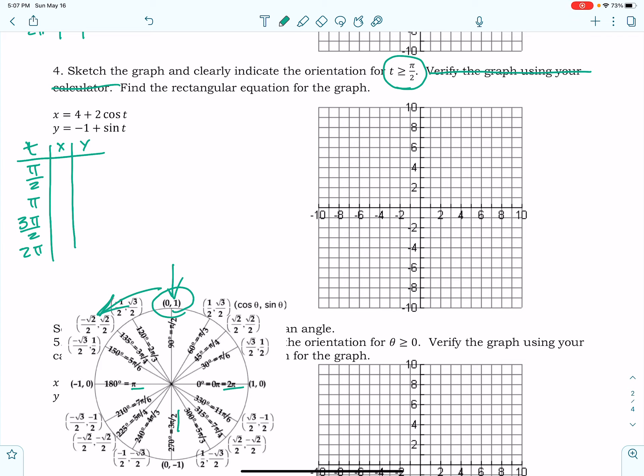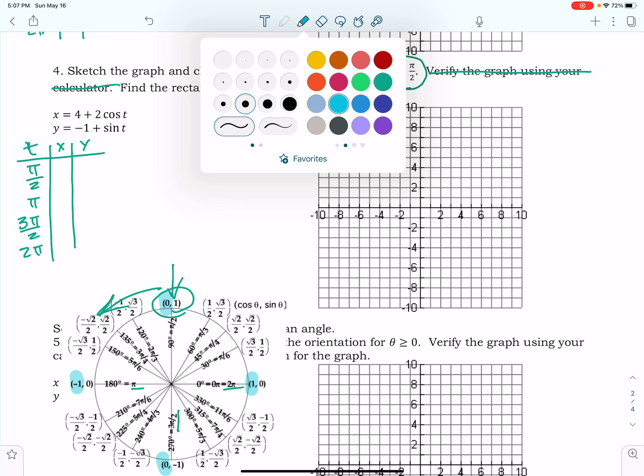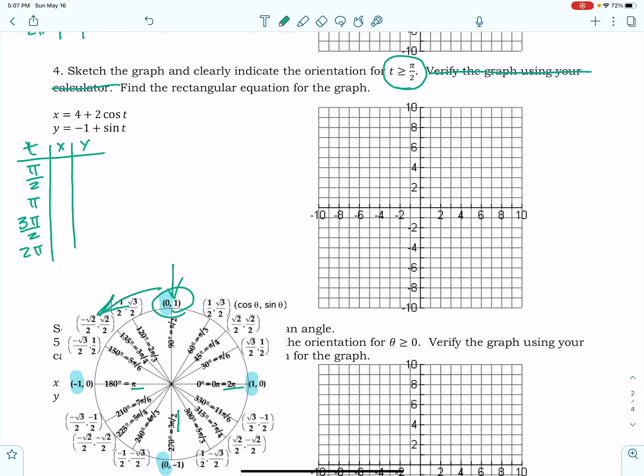Okay, so the x values are going to be the cosine values here. And so we'll just go through here. For the x values, I've got 4 minus 2 times cosine t. So at pi over 2, the cosine value is 0, so 4 plus 0 is 4. And then at pi, I've got 4 plus 2 times negative 1, so 4 minus 2, which is 2. And then at 3 pi over 2, I've got 0, so that would give me another 4. And then at 2 pi, it's 1, so 4 plus 2 would give me 6.